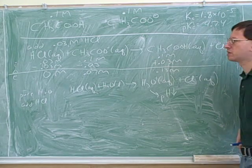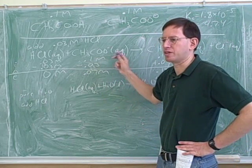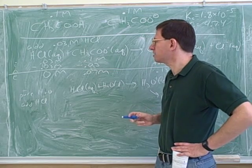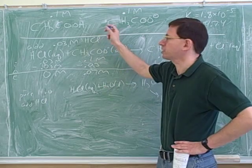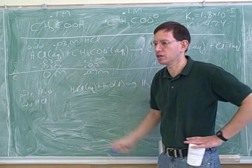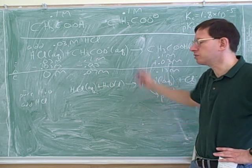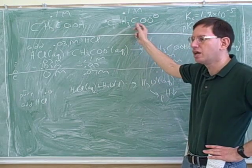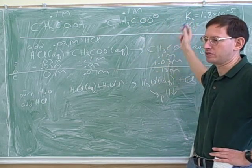You could also use a start-change-end table with an equilibrium constant, and that's fine. However, when we have a buffer situation, we have the Henderson-Hasselbalch shortcut. Normally in acid-base problems we use a start-change-end table, and we still could here — but the Henderson-Hasselbalch equation is a nice shortcut to use instead.